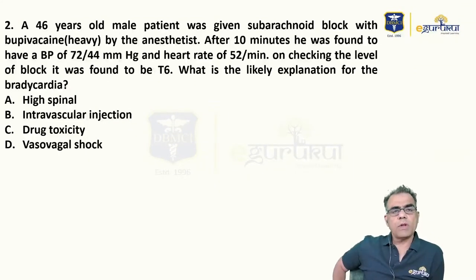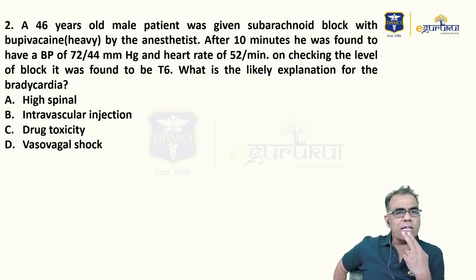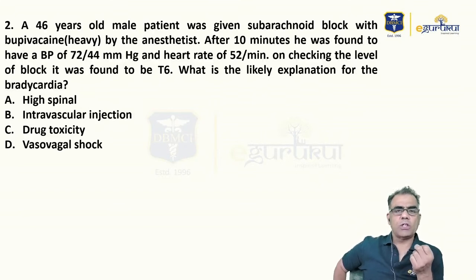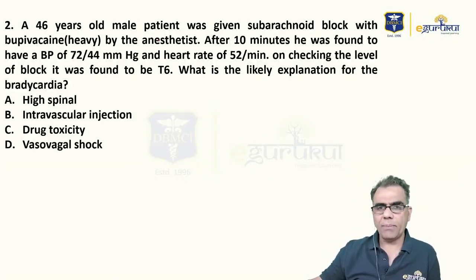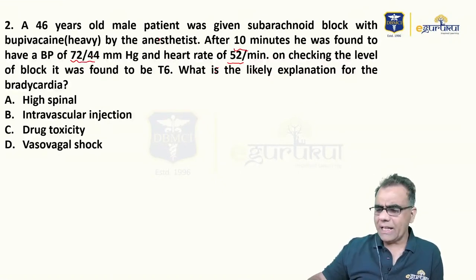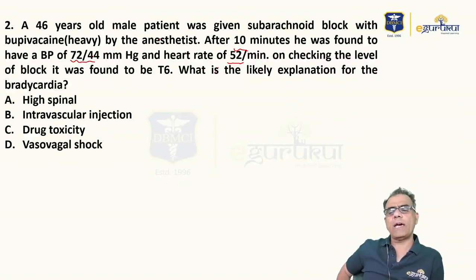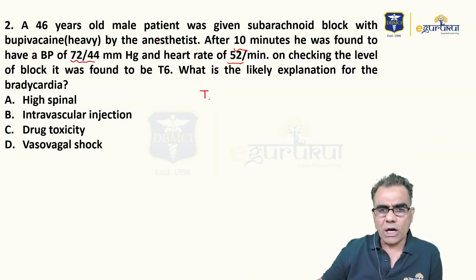Question number two: A 46-year-old male was given subarachnoid block with bupivacaine heavy. After 10 minutes, BP was 72/44 mmHg and heart rate 52 per minute. Level of block was found to be T6. What is the likely explanation for bradycardia? Options: high spinal, intravascular injection, drug toxicity, vasovagal shock. The patient developed both bradycardia and hypotension. This indicates the level of block has ascended to block the cardioaccelerator fibers, which are from T1 to T4.